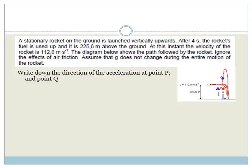At point Q, the only force acting on the rocket is the force of gravity, which is downwards. So therefore, the direction of the acceleration at point Q is downwards. At point P it is upwards, and at point Q it is downwards. That is the direction of the acceleration.